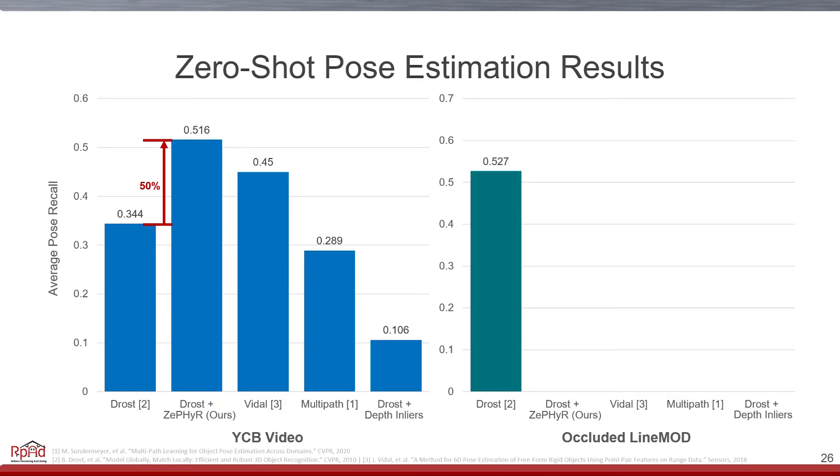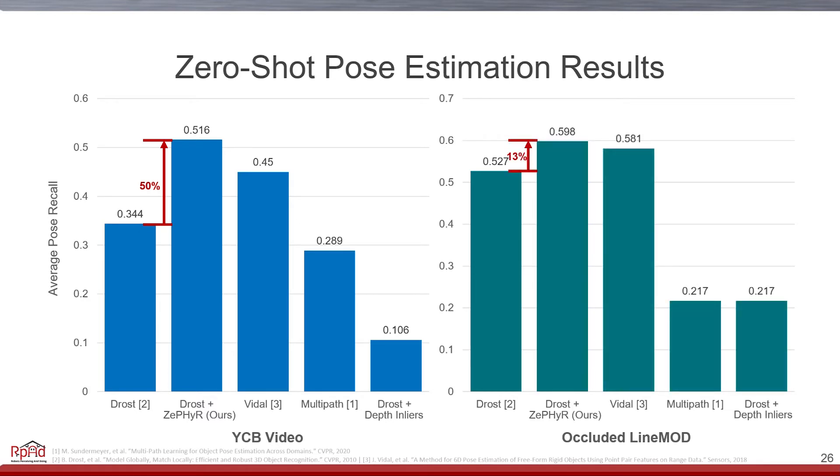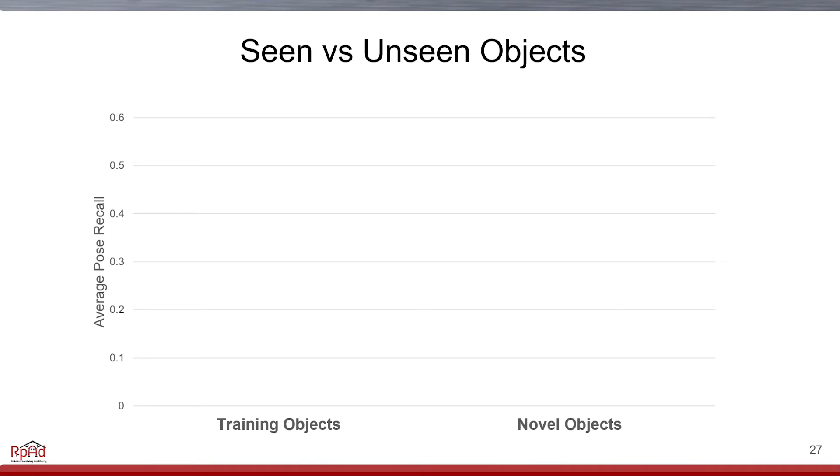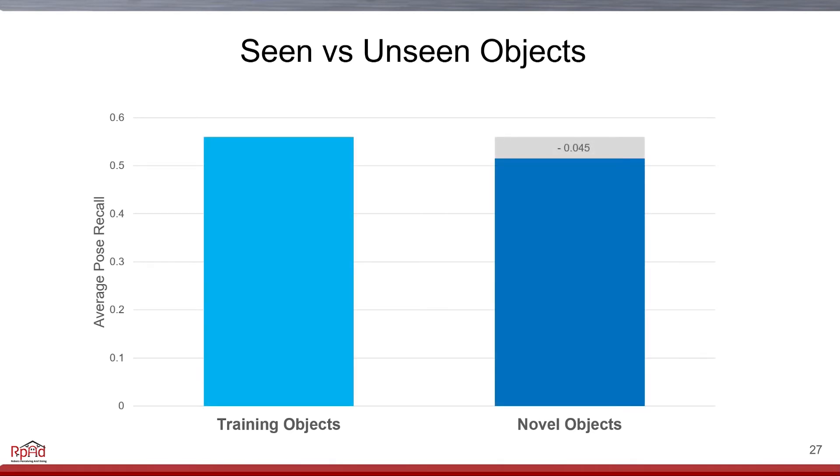We see similar results on occluded LineMOD, achieving a 13% improvement over other zero-shot methods. As a reminder, our methods have not been trained on these objects. And if we compare to the objects our method has been trained on, we see that there is only a 5% drop in average recall between training and novel objects.